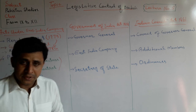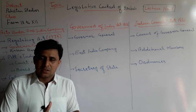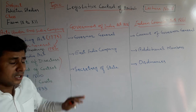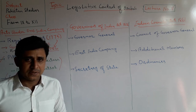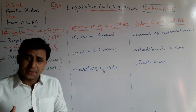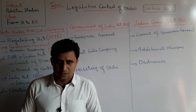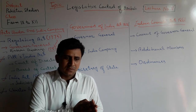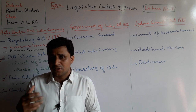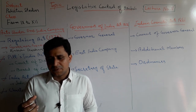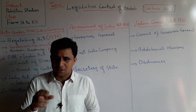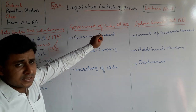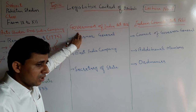When the War of Independence took place in 1857, the British East India Company was ended and all territories which were under the British East India Company were given to the Crown. After the 1857 War of Independence, the British directly ruled over the subcontinent.